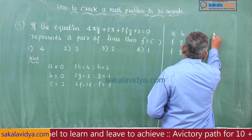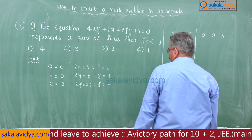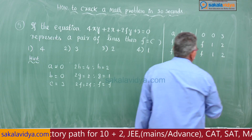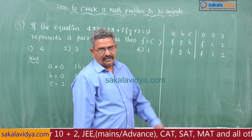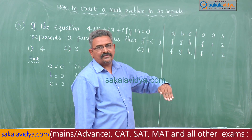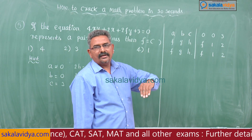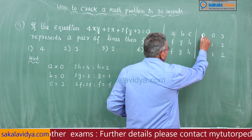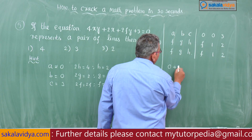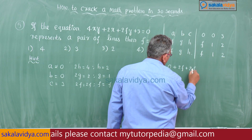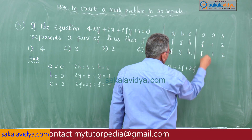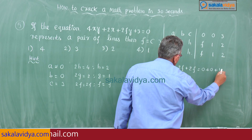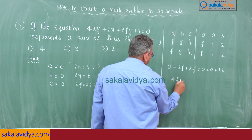So a, b, c = 0, 0, 3 and f, g, h = f, 1, 2, repeated as f, 1, 2. The sum of products of rows equals sum of products of columns: 0 + 2f + 2f equals 0 + 0 + 3×2×2 = 12. So 4f = 12.